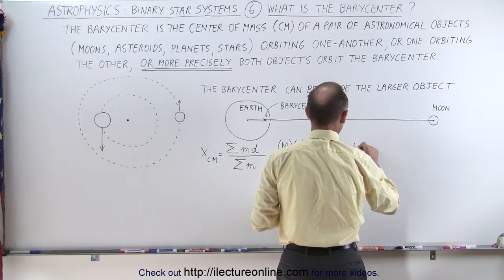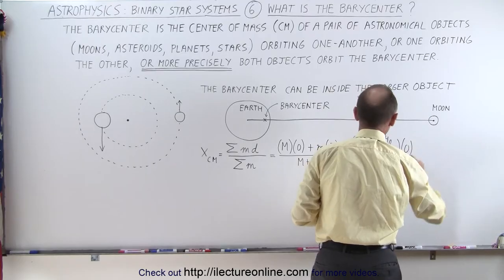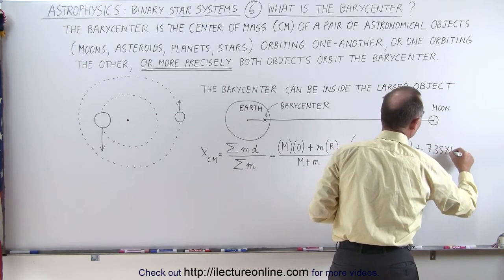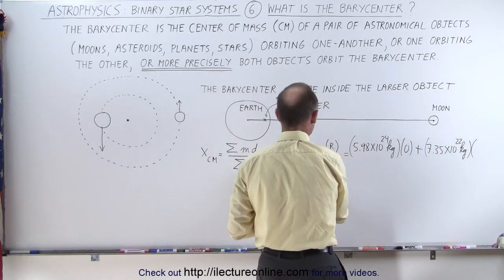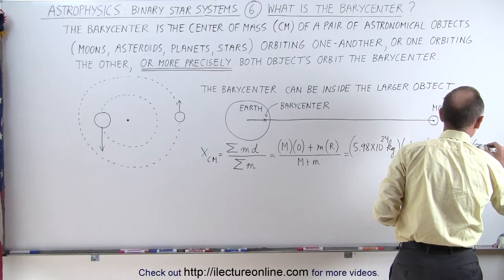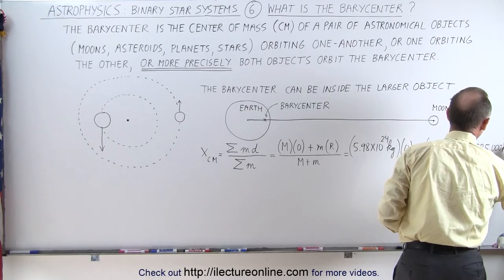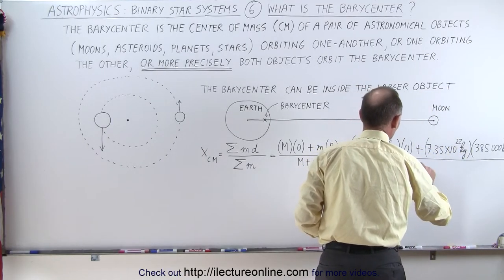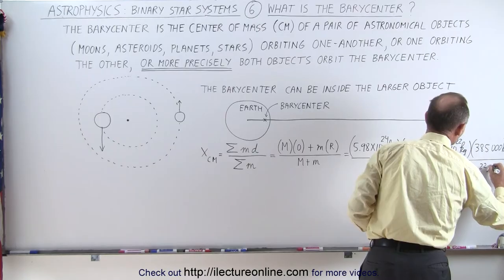The mass of the Earth is 5.98 times 10 to the 24th kilograms. We multiply that times zero, because we put the origin at the center, plus the mass of the Moon, 7.35 times 10 to the 22 kilograms, times the distance between the Earth and the Moon, which is 385,000 kilometers. We divide the whole thing by the sum of the two masses: 5.98 times 10 to the 24th plus 7.35 times 10 to the 22nd.